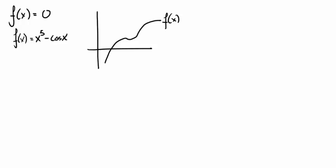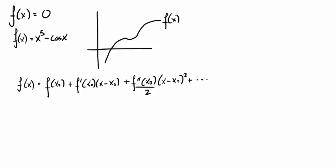We start by considering the Taylor expansion of f of x about a point x0. The Newton-Raphson method relies on the fact that the linear approximation to the function is good locally. So near to x0, we can replace f of x with the boxed expression and neglect the higher order terms.